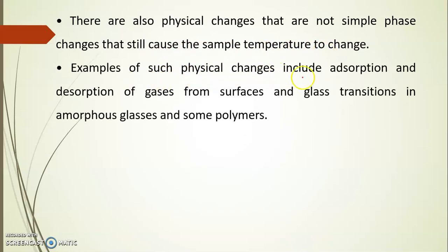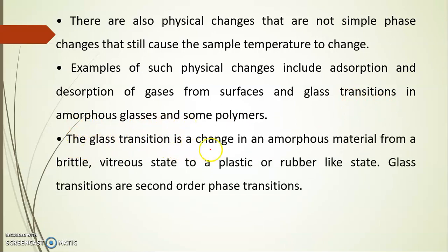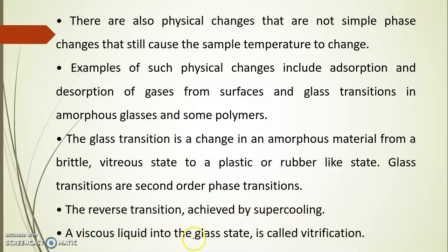Examples of such physical changes include adsorption and desorption of gases from surfaces and glass transitions in amorphous glasses and some polymers. The glass transition is a change in an amorphous material from a brittle vitreous state to a plastic or rubber-like state. Glass transitions are second-order phase transitions. The reverse transition is achieved by supercooling. A viscous liquid into glass state is called vitrification method.